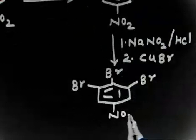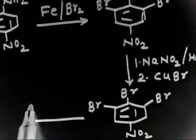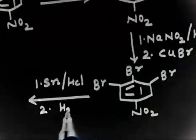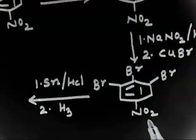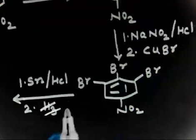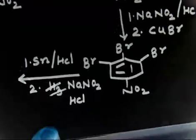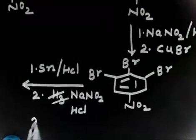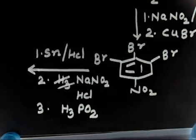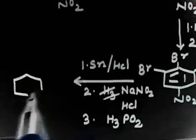Next, you need to remove the NO2 group. You reduce it: first use SnCl2/HCl as the reducing agent to convert the NO2 to NH2. Then treat with NaNO2/HCl to form the diazonium cation again. The third reagent is H3PO2, which replaces the diazonium cation with hydrogen.